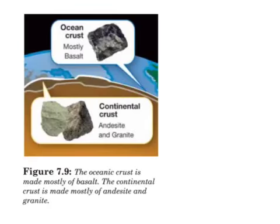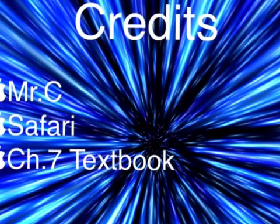The ocean crust is mostly made of a material called basalt, which is an igneous rock. The continental crust is mostly made of andesite and granite. Credits: mrclossette.jerseyburg.edu and the chapter 7 textbook.